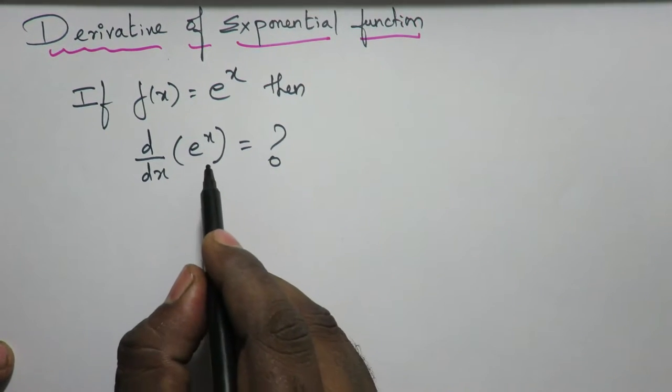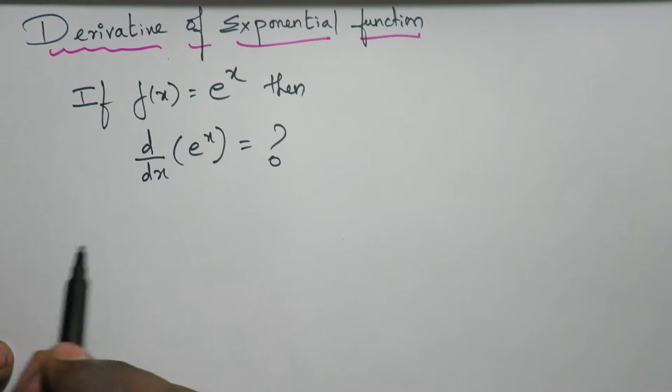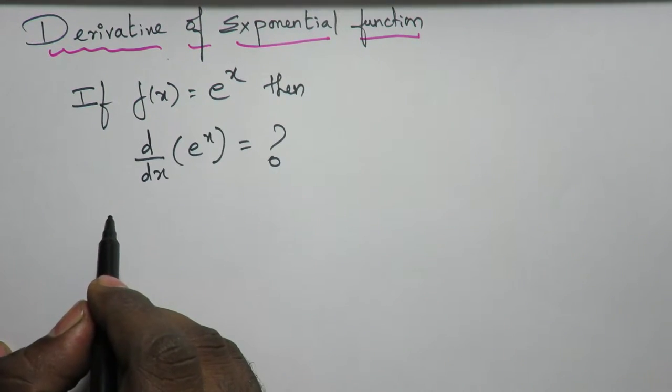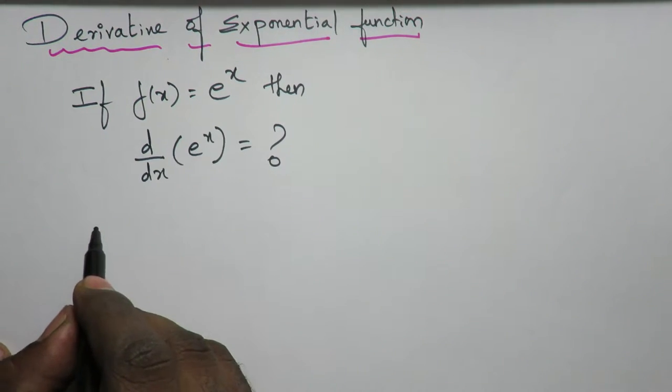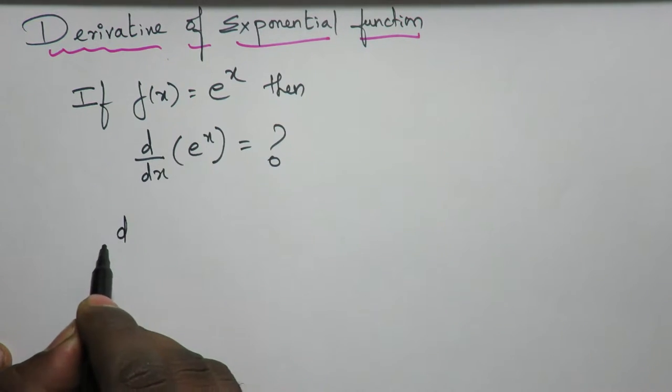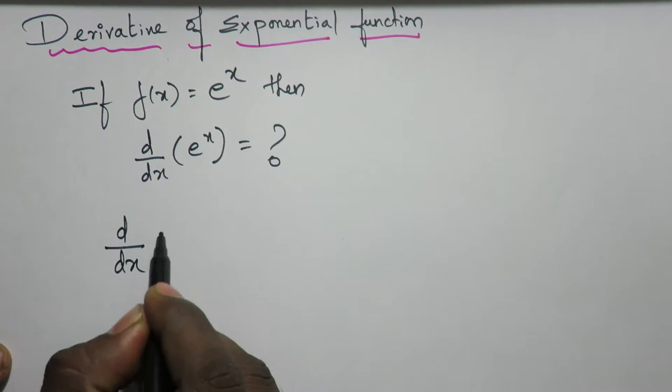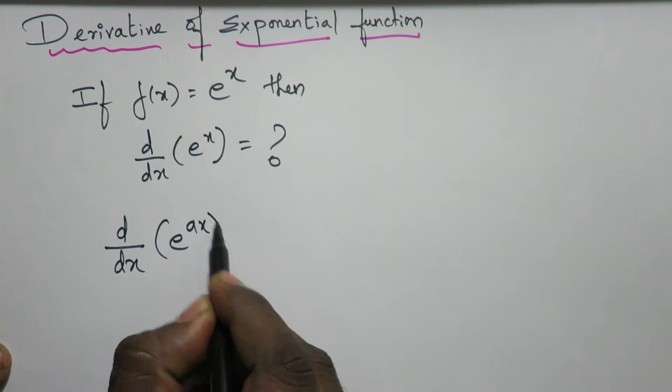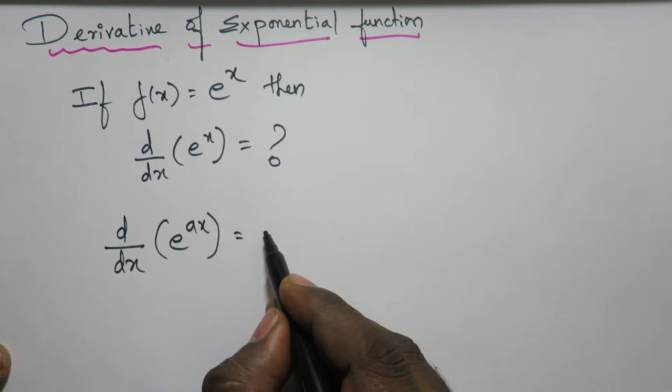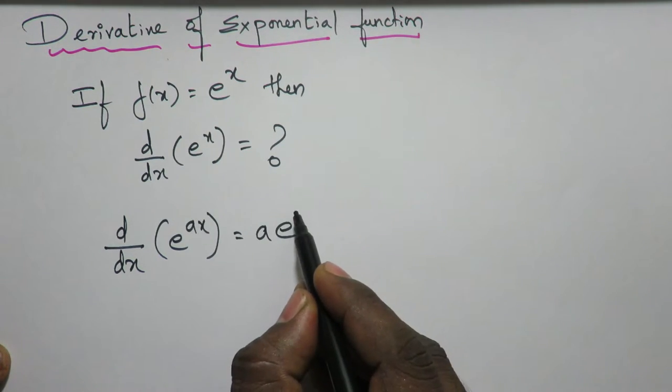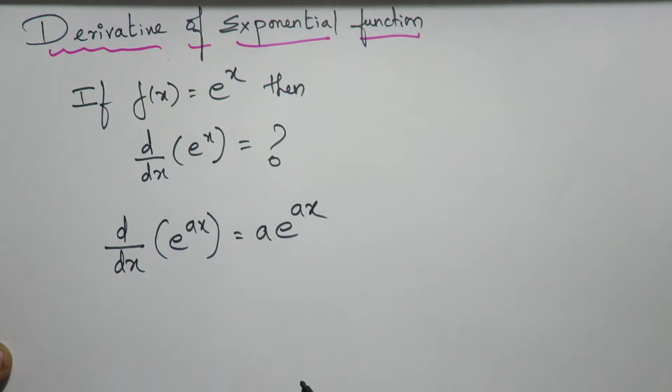To solve this, let me find the formula. The formula is d/dx of e^ax equals a times e^ax.